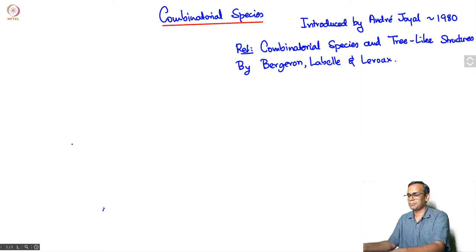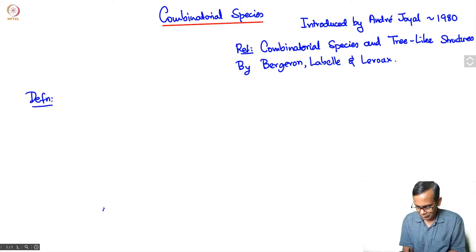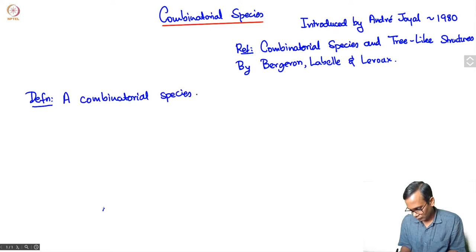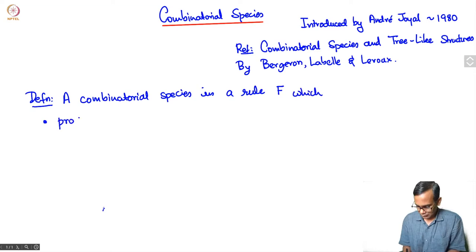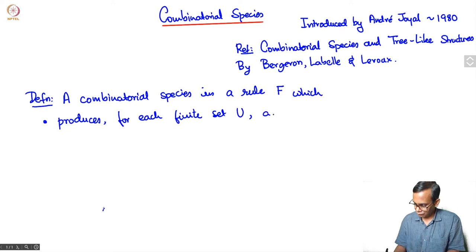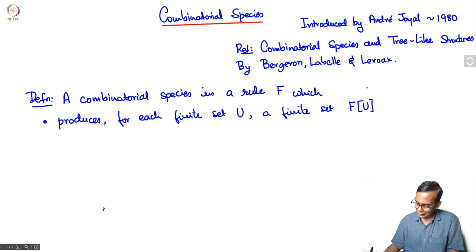Here is the definition. A combinatorial species is a rule — we usually give this rule a name. F is the generic name for a combinatorial species. What does this rule do? Firstly, it produces for each finite set U a finite set F(U), and this finite set F(U) is called the set of F-structures on U.